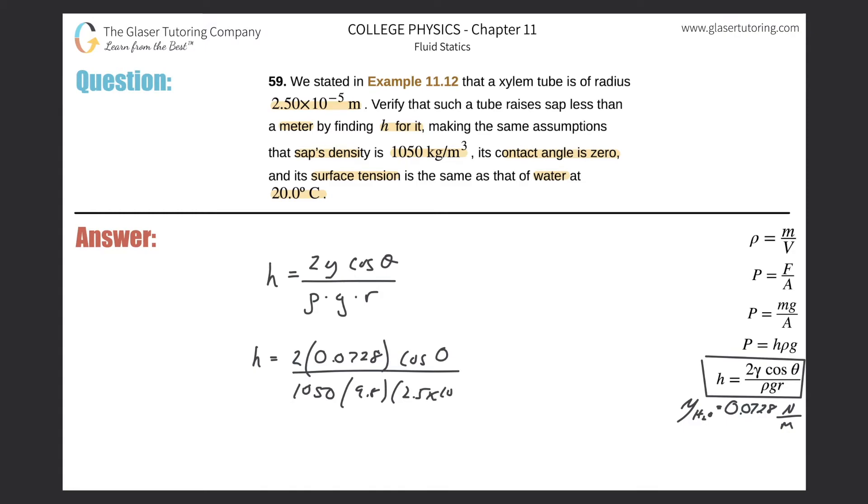It's right up here. So let's just throw it into the calculator. These problems are nice, very simple. 2 times 0.0728 times cosine of, well that's just one so you don't even have to plug it in, then divided by 1050 times 9.8 times 2.5×10^-5.